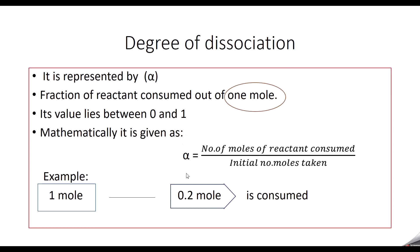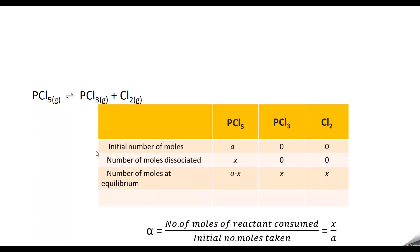Mathematically, the degree of dissociation is: alpha equals the number of moles of reactant consumed divided by the initial number of moles taken. For PCl5, from the tabular column, X moles are consumed and the initial number of moles taken is A. Therefore, alpha is equal to X divided by A.